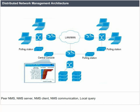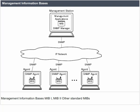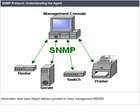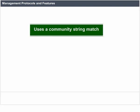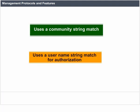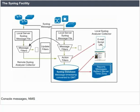Management Information Bases (MIBs): MIB1, MIB2, and other standard MIBs. SNMP protocol — understanding the agent involves an information database and object definitions provided in many management systems. The features of management protocols include using a community string match, a username string match for authorization, a log facility, console messages, and NMS.